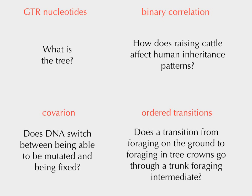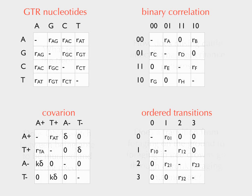Another problem is that many of our methods are all basically reframings of the same method. For various questions — tree inference from nucleotides, binary trait correlations like whether raising cattle affects human inheritance, covariation, transitions like foraging on the ground versus in tree crowns — these seem like very different questions, but underneath they all use the same discrete transition rate matrix, just varying what the states are. They're all basically the same approach.